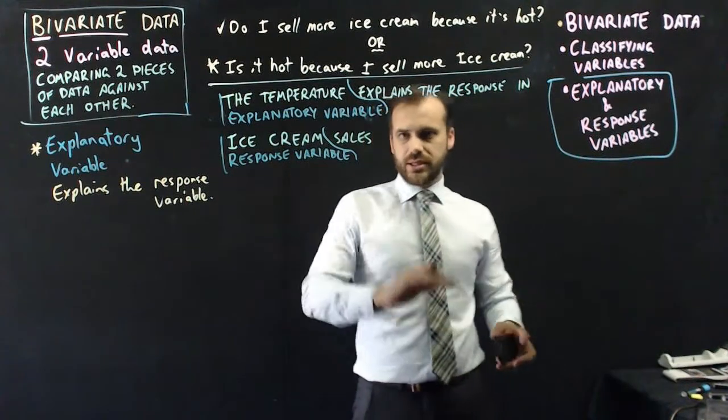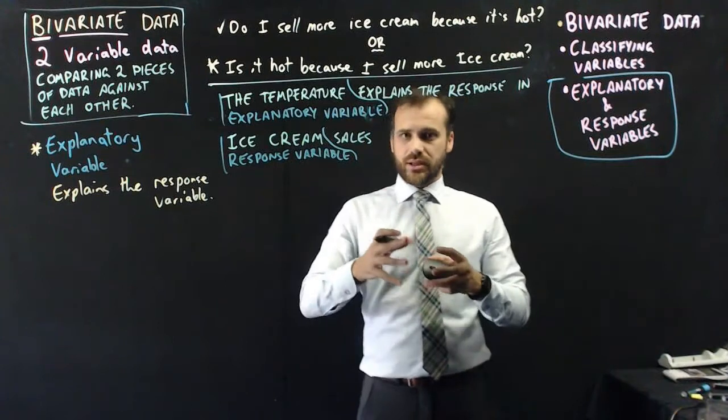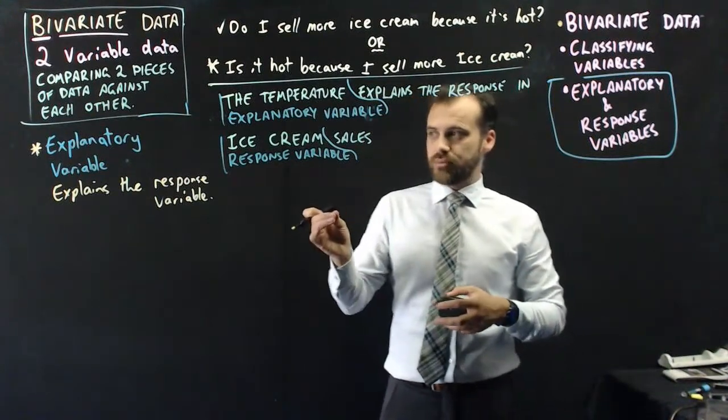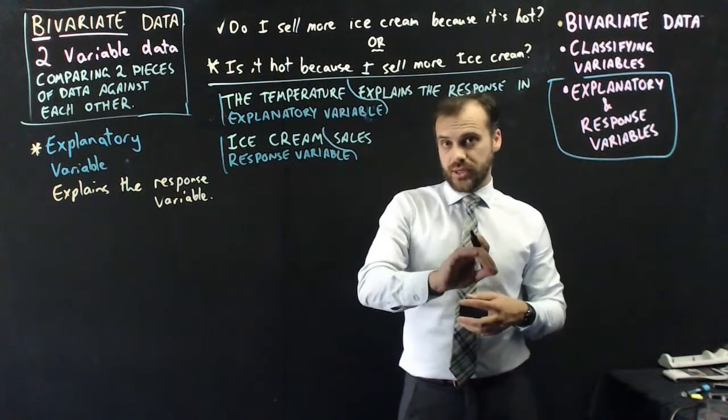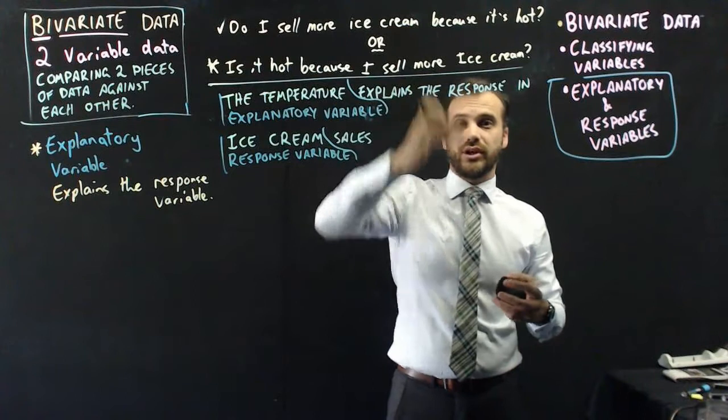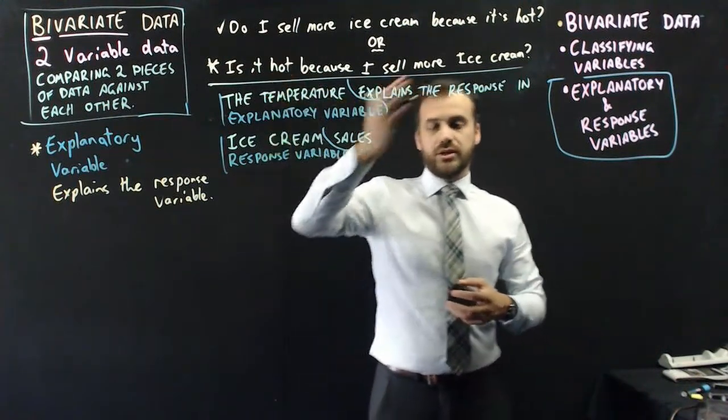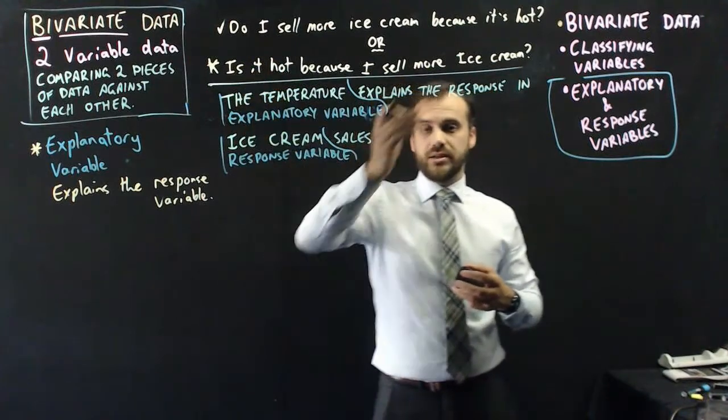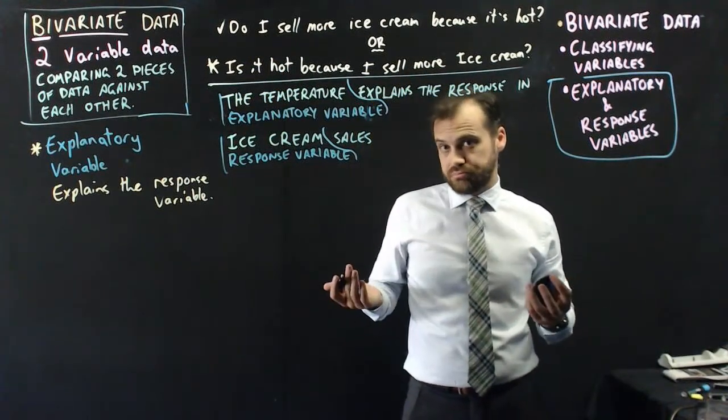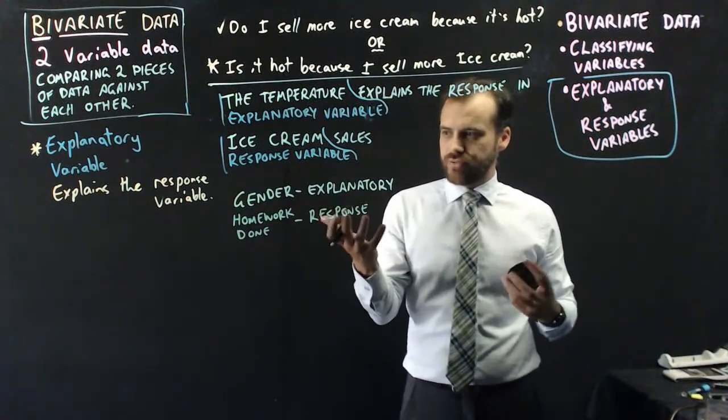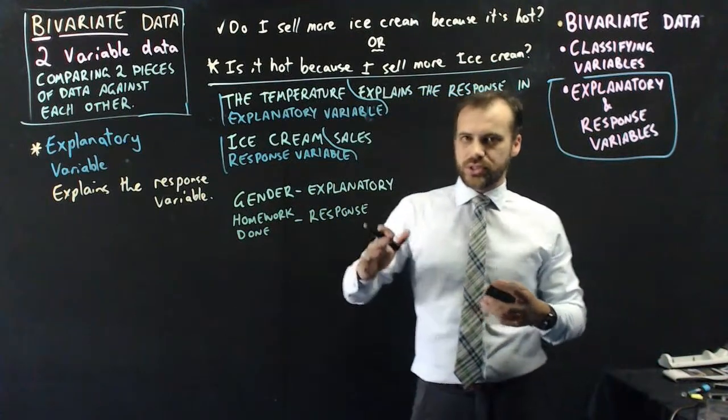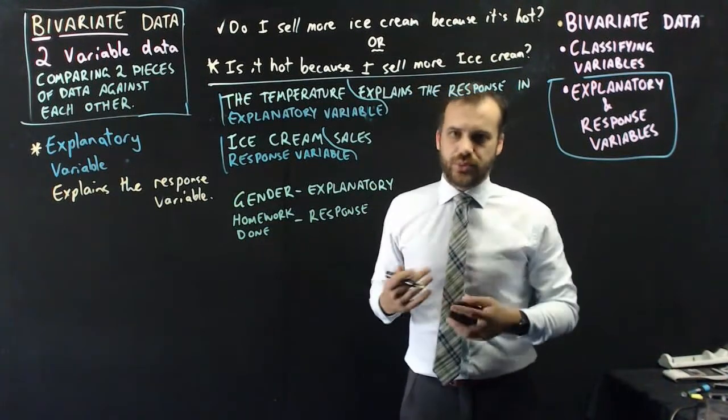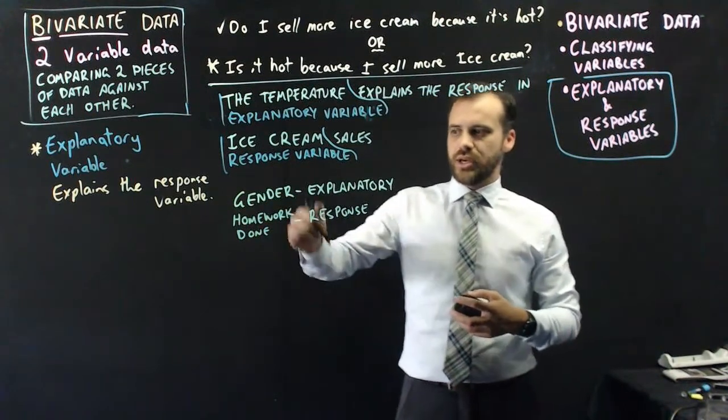So I can say that the temperature explains the response in ice cream sales. The response being how much ice cream sales go up or down. So the temperature is our explanatory variable and the ice cream is our response variable. Now this was an example of two numerical data points. And we can see that one's the explanatory variable and one's the response variable. Now another example that I did in this video was saying homework and gender and comparing homework and gender. Now ask yourself which one is the explanatory variable and which one is the response variable. And a good way to ask yourself is to create a set of questions kind of like this one. Now does your gender change depending on how much homework you do or depending on whether you did your homework, or does the homework you do depend on whether you're a male or a female?